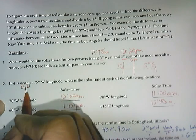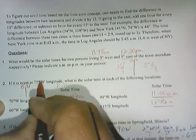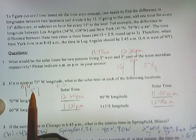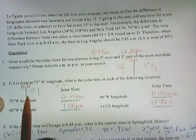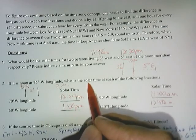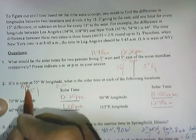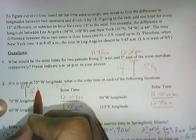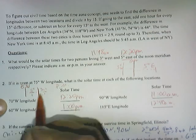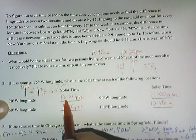Let's talk about 70 west. I know if I go this way, I'm getting closer to the prime meridian. So it's going to be 5 degrees east of the reference. That means my solar time, since it's noon at 75 degrees west and 70 west is 5 degrees east of it, is 5 degrees times 4 minutes per degree — 20 minutes past noon. So it's going to be 12:20.